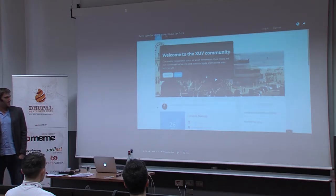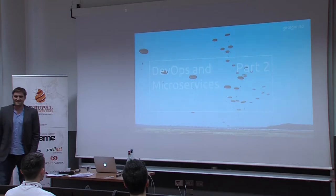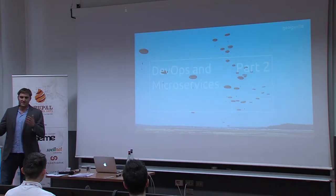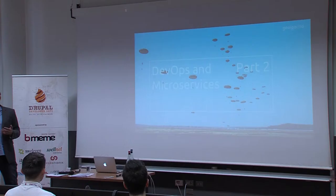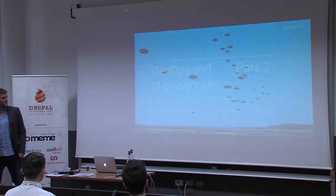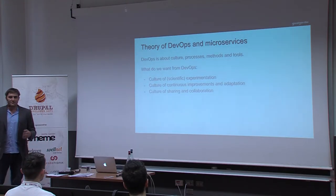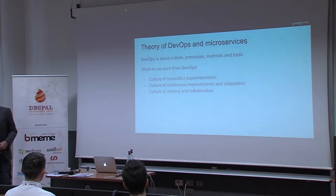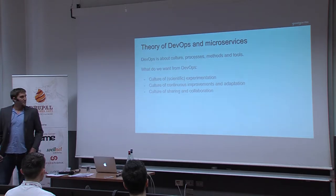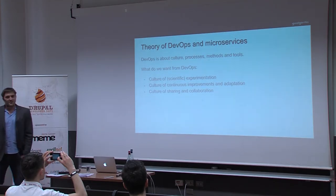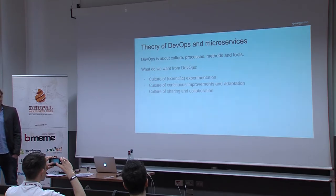Now we go to the exciting stuff. We've really been thinking about DevOps, because when you work for one client it's different than having a hundred — and that's the idea of Open Social. Before defining DevOps by jumping straight into tools and technical details, I think DevOps is really about culture in a company. What do we want from this culture? I think it's three things: scientific experimentation, adapting to the environment and clients for continuous improvement, and a culture of sharing, contributing, and collaboration.